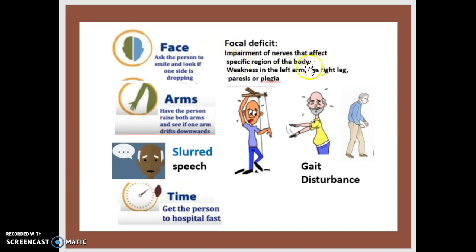A focal deficit is an impairment of nerves that affects specific regions of the body — for example, weakness in the left arm or the right leg. The terminology used is paresis or plegia.